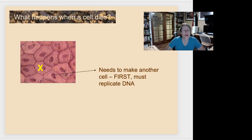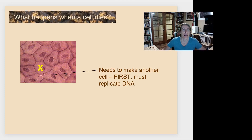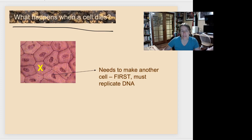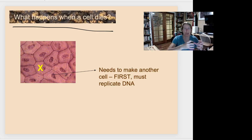In this video we're going to talk about why a cell would need to copy all of its DNA and how it gets started. Imagine some skin cells — what happens when a cell dies? If a cell dies it needs to be replaced, so a cell adjacent to it will get the message that its neighbor has died, and that neighboring cell needs to grow bigger and divide into two to fill the gap.